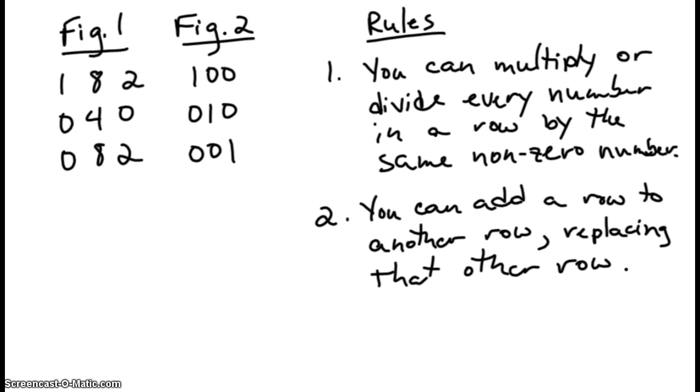Number one, you can multiply or divide every number in a row by the same non-zero number. Just like doing you know you got to treat the two sides of the equal sign the same, you got to treat the rows the same. If you're going to multiply one number, you have to multiply or divide all the numbers. Rule two is you can add a row to another row, replacing that other row with the sum of those rows.